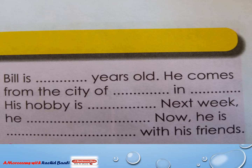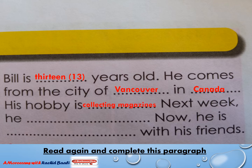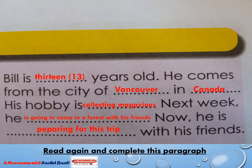Now I'd like you to read the email again and try to complete this paragraph. You're going to pause the video, do it in about one or two minutes, then play it again. Here are the answers: Bill is 13 years old. He comes from the city of Vancouver in Canada. His hobby is collecting magazines. Next week, he is going to camp in a forest with his friends. Now he is preparing for this trip with his friends.